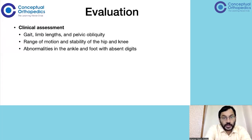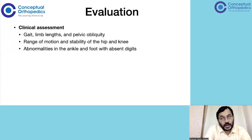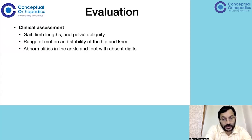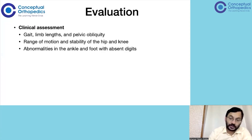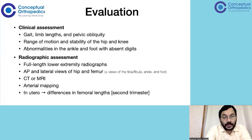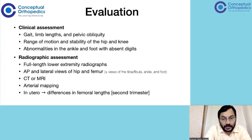Coming to the evaluation — the clinical evaluation will be discussed around the gait of the patient, how different the limb lengths are, whether there is pelvic obliquity, range of motion at the hip and knee, and stability of the hip and knee. We also need to assess abnormalities of the ankle and foot with absent digits. For radiological assessment, full-length lower extremity radiographs are needed. AP and lateral views of the hip and femur are essential. If there is fibular hemimelia and/or ray deficiency, additional views for the leg, ankle, and foot are also needed.